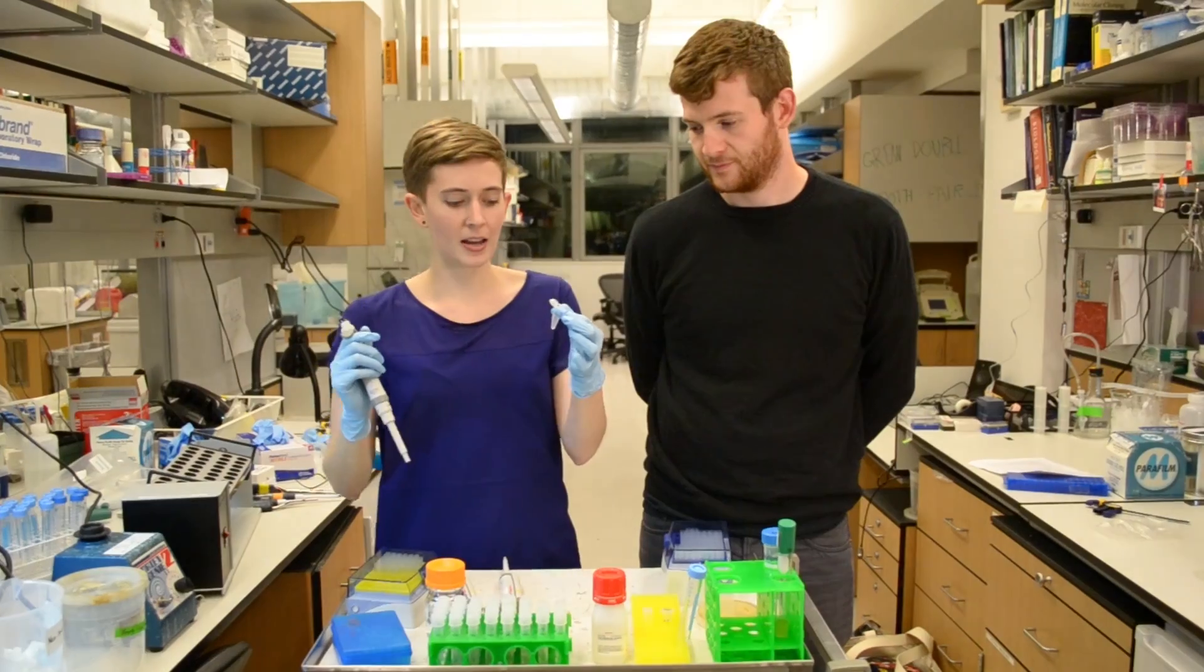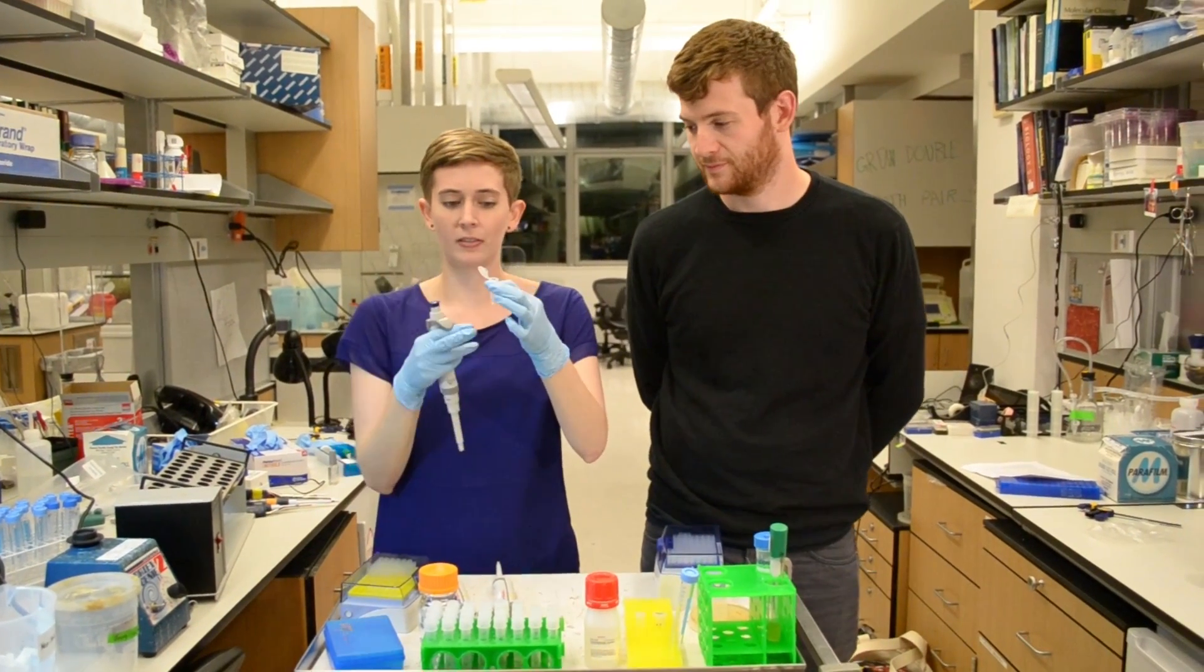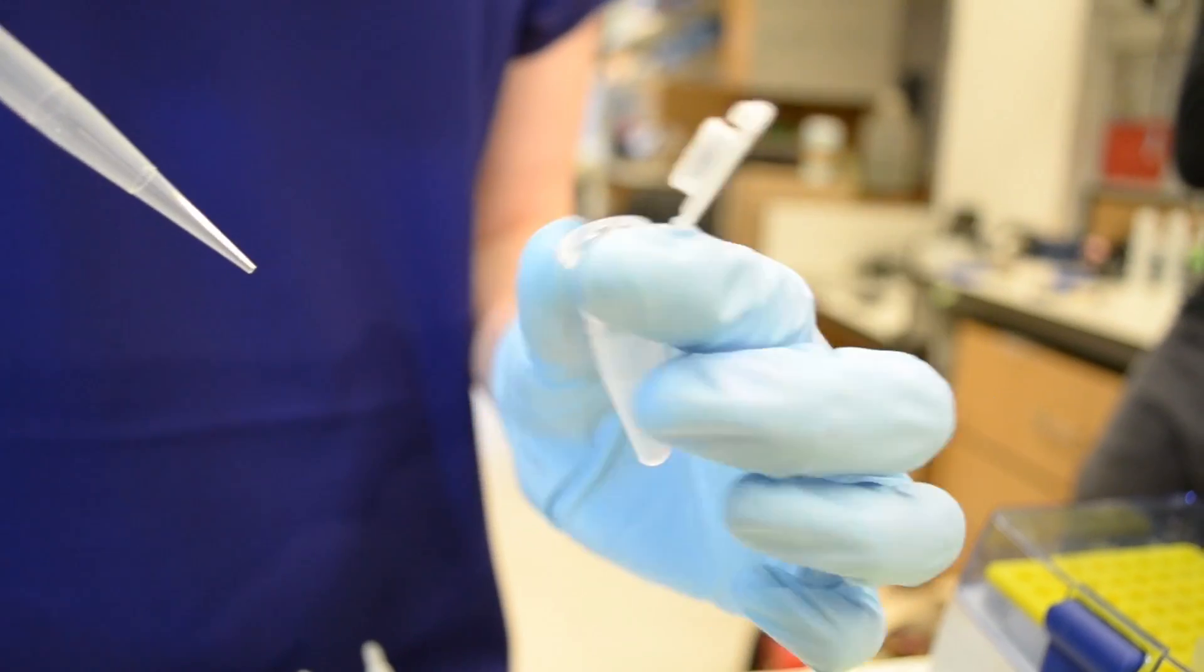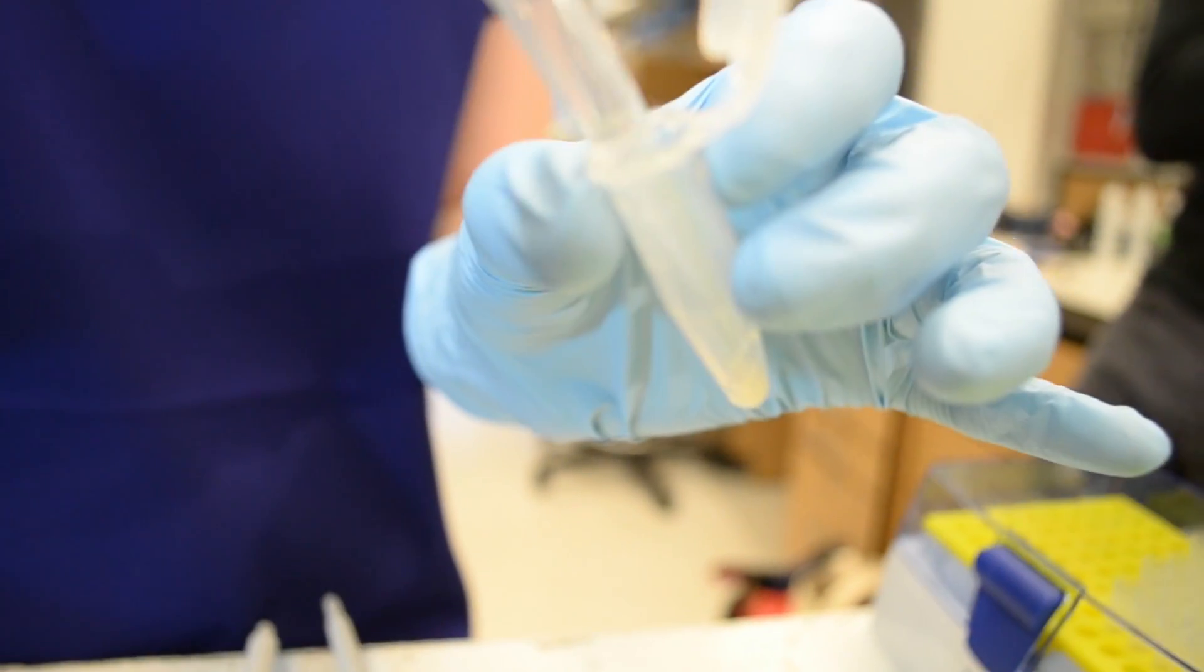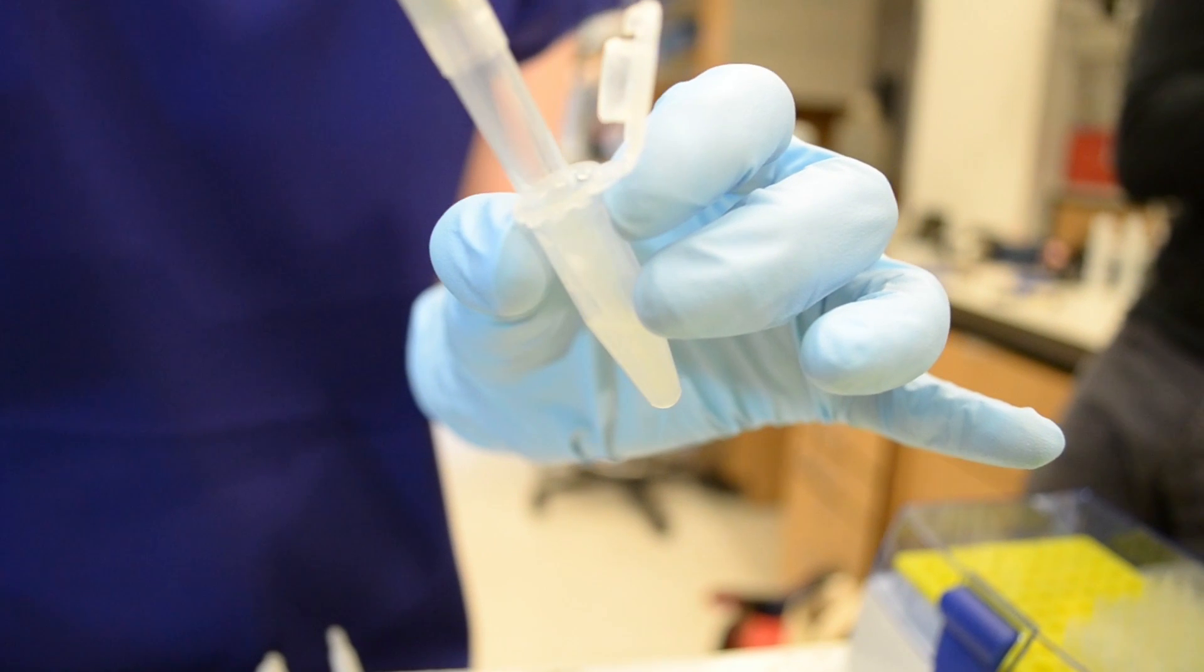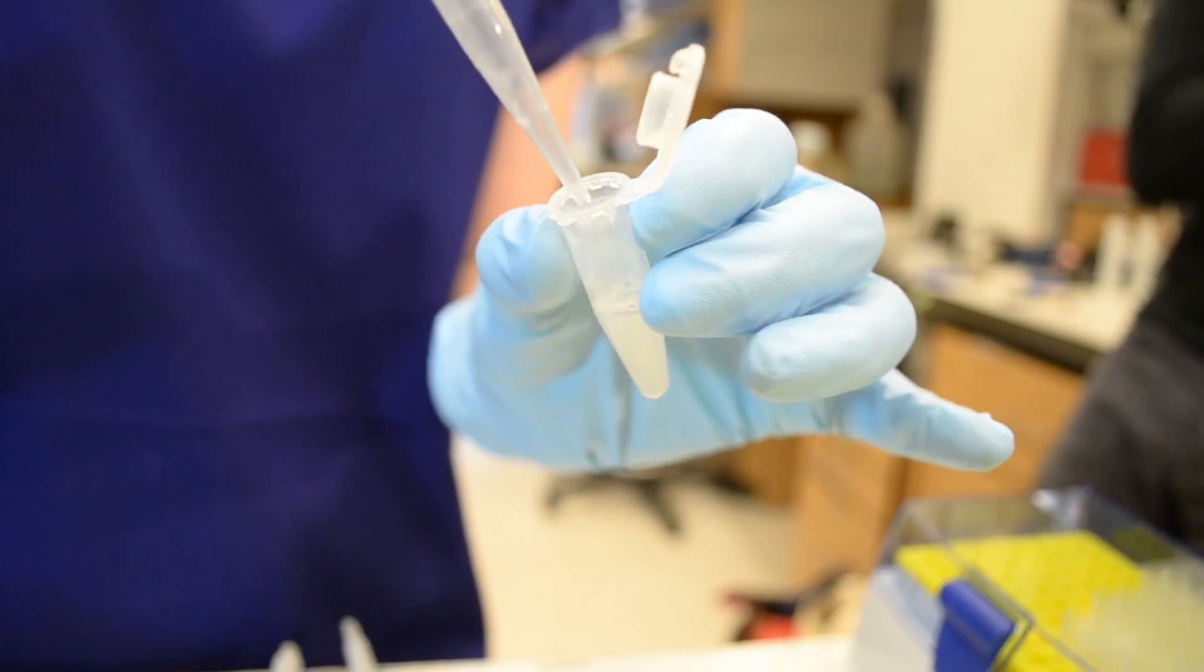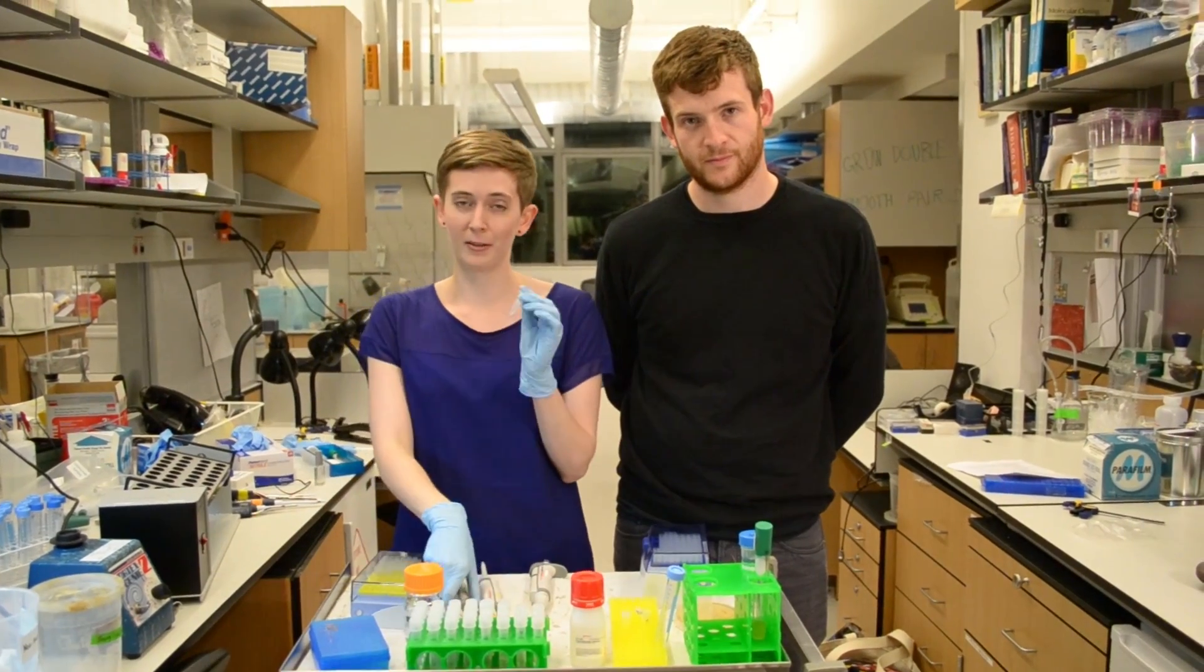Now it's time to digest the cell walls of the yeast, so I'm going to add a mixture of enzymes to that pellet of yeast cells. This gets rid of the cell walls because we want to see what's inside the cell. Then I put them on the rotator for a while to make sure that the digestion is complete.